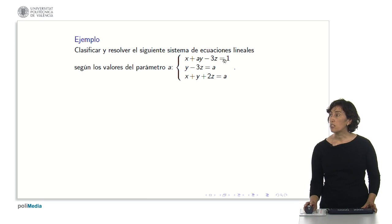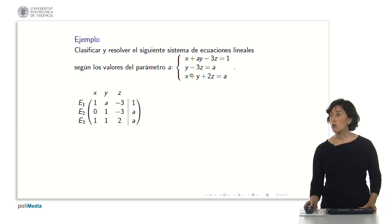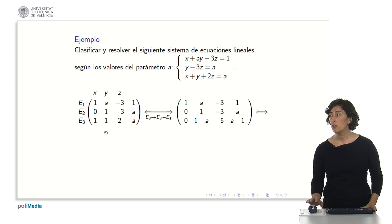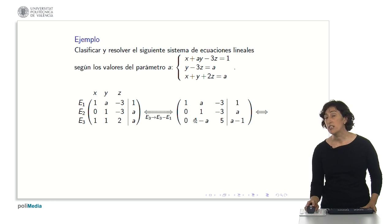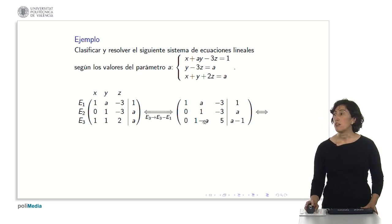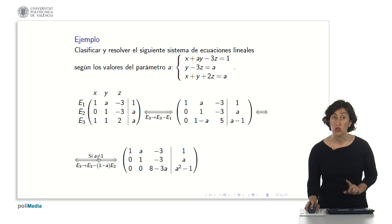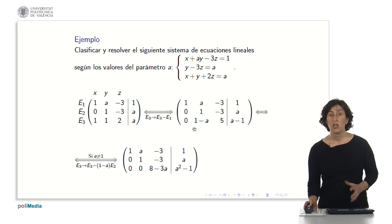Let's see this other example. The system: x plus a times y minus 3z equals 1, y minus 3z equals a, and x plus y plus 2z equals a. We apply the Gauss method: write equations 1, 2, and 3 with x below x, z below z, placing the parameters where they correspond. We make zeros below the diagonal — a zero here and a zero here. The first operation, equation 3 minus equation 1, gives a zero and leaves 1 minus a here. To continue, we need to make this 1 minus a into a zero. We can do this simply: subtract from equation 3 the quantity (1 minus a) times equation 2, which gives zero. However, we can always do that only when a is different from 1, because if a equals 1, we already have the zero. Therefore, here we have to separate two cases.